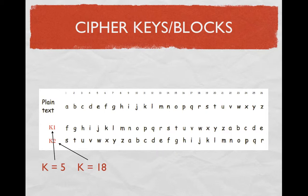That'll be your first cipher block. The second cipher block is created by taking the number 18 and counting from the original plain text, which is the letter S, and doing the same thing.